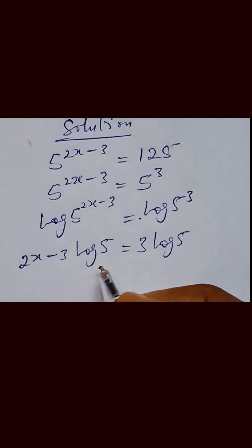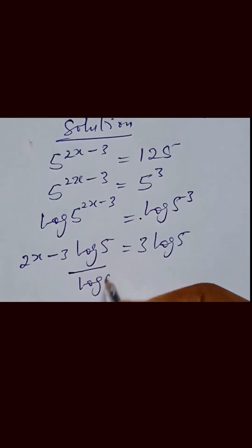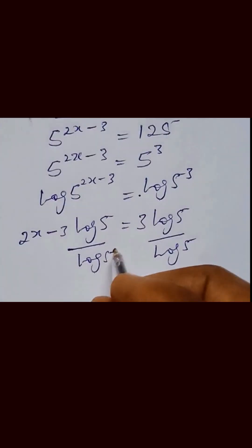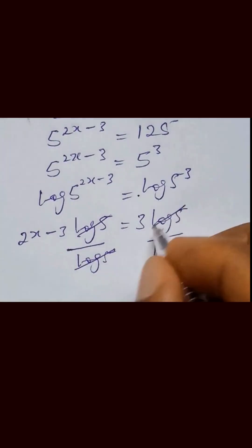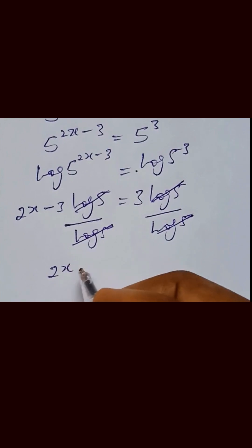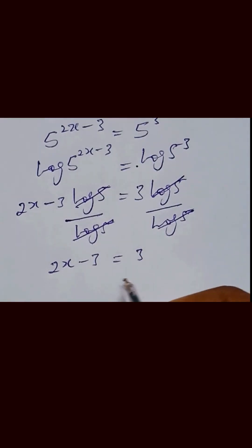We then divide both sides by log of 5. Log 5 cancels on both sides, leaving us with 2x minus 3 equals to 3. So the 3 comes to the right hand side.